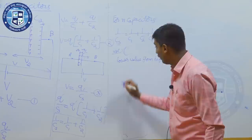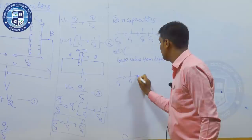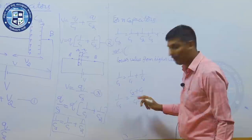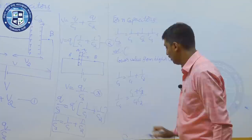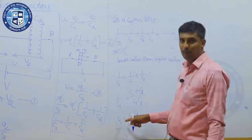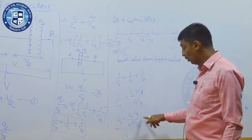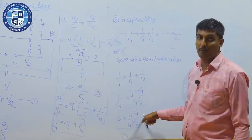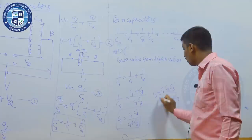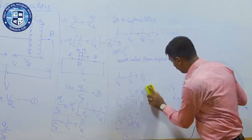For two capacitors in series, use the direct formula: 1 by CS equals 1 by C1 plus 1 by C2, which gives CS equals C1 C2 divided by C1 plus C2. But this formula is only valid for two capacitors in series — you cannot extend it to three or more. Some students write C1 C2 C3 divided by C1 plus C2 plus C3 for three capacitors, but this is wrong.